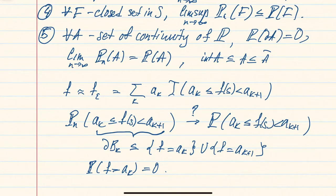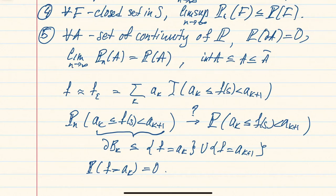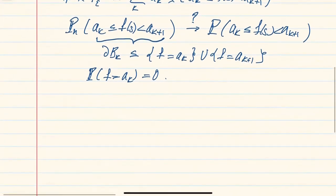That completes the Portmanteau theorem. In this section we will already see applications of several of these equivalent conditions: right now we'll see application of condition two — restricting to bounded Lipschitz functions — and a little later we'll see situations where it's convenient to use the condition in terms of closed sets. Let's look at an application to the so-called convergence of empirical measures, also known as Varadarajan's theorem.